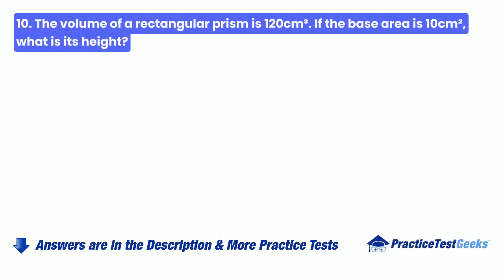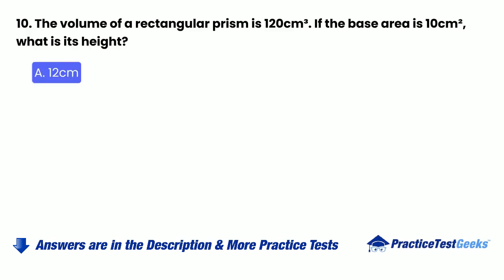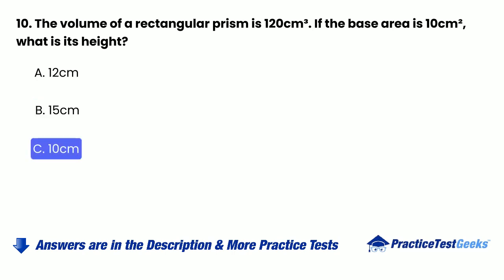Question 10: The volume of a rectangular prism is 120 cubic centimeters. If the base area is 10 square centimeters, what is its height? A. 12 centimeters. B. 15 centimeters. C. 10 centimeters. D. 8 centimeters.